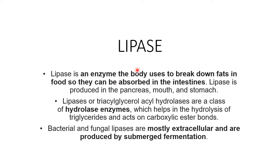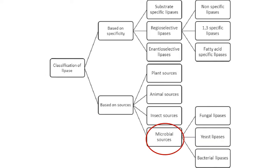Even bacterial and fungal lipases are mostly extracellular — that means they are secreted out of the cell — and are produced by submerged fermentation in case of large-scale production. Submerged fermentation is the method used for production. Here you can see the classification of lipase depending on specificity or source.